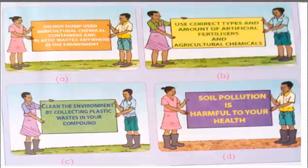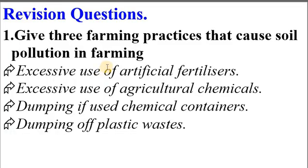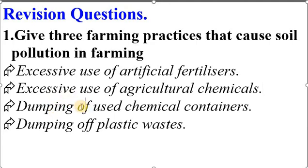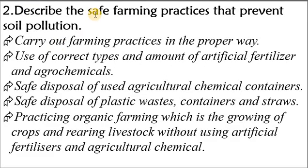That is the end of our lesson. Let's go through the revision questions. The first question asks us to identify three farming practices that cause soil pollution. We actually learned four: excessive use of artificial fertilizers, excessive use of agricultural chemicals such as herbicides and pesticides, dumping of used chemical containers in farming areas, and dumping of plastic wastes in the farm.